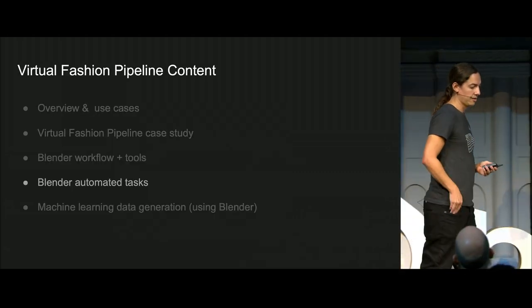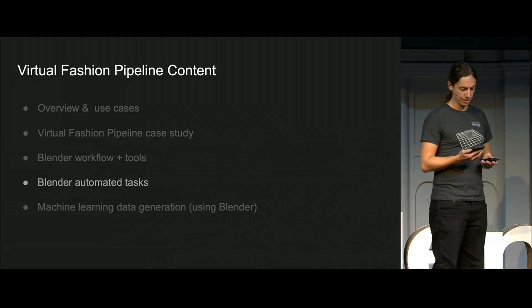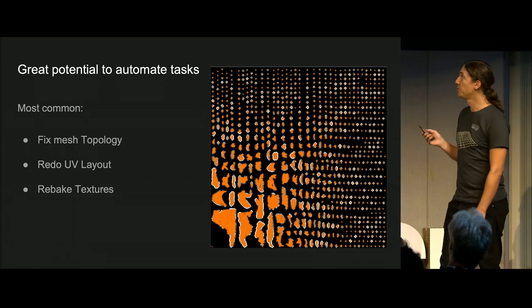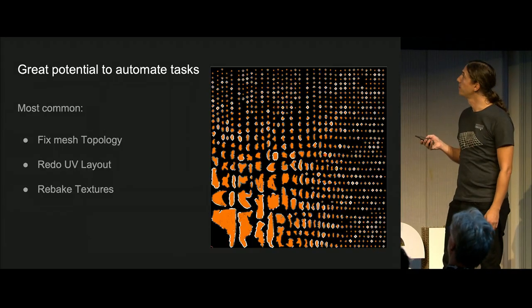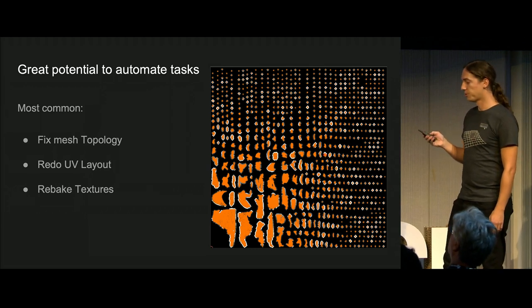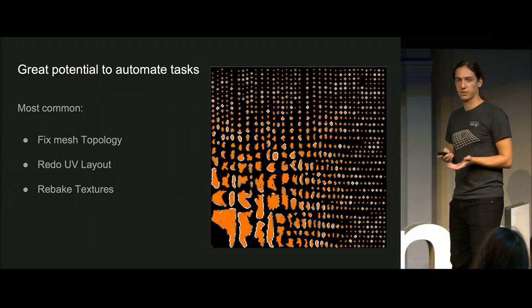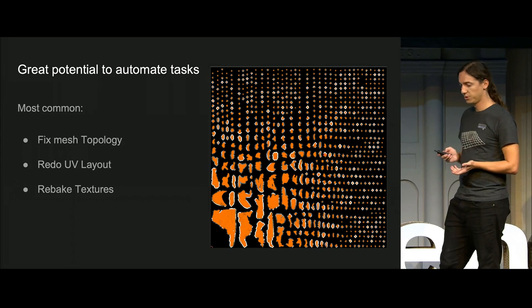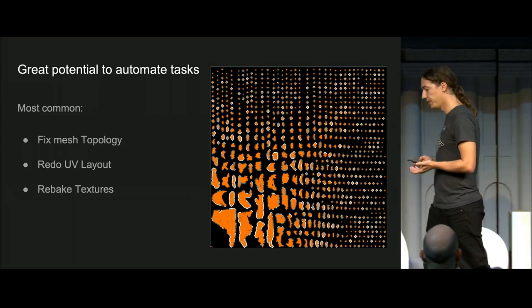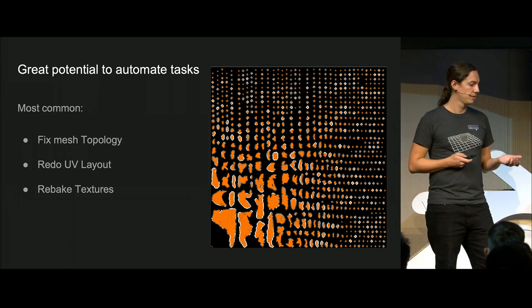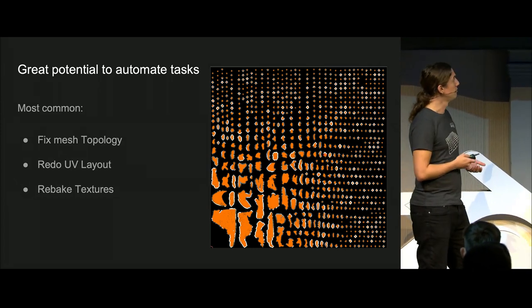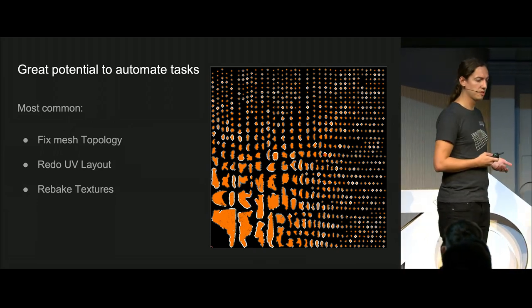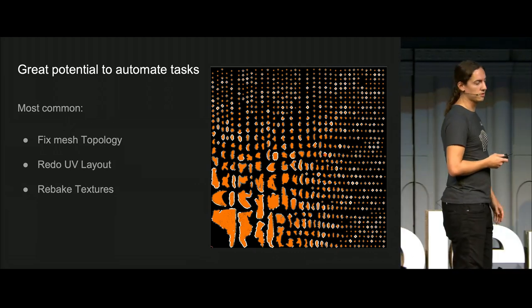So we thought of ways to automatically check and fix for them, which brings me to the tasks we automated. Most commonly, to fix the issues, we fixed the topology — which is best done by simply remeshing the mesh, so it can be done automatically. If you're remeshing, you have a new mesh anyway which needs a new UV layout, so might as well make that as clean as possible. And after that's done, we can rebake the textures. We noticed that if we do those three steps automatically, we can fix most of the issues I just showed you.